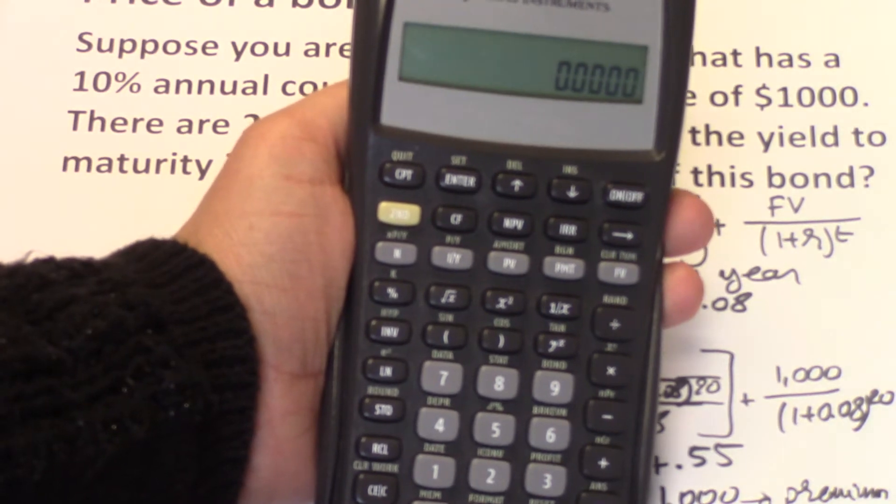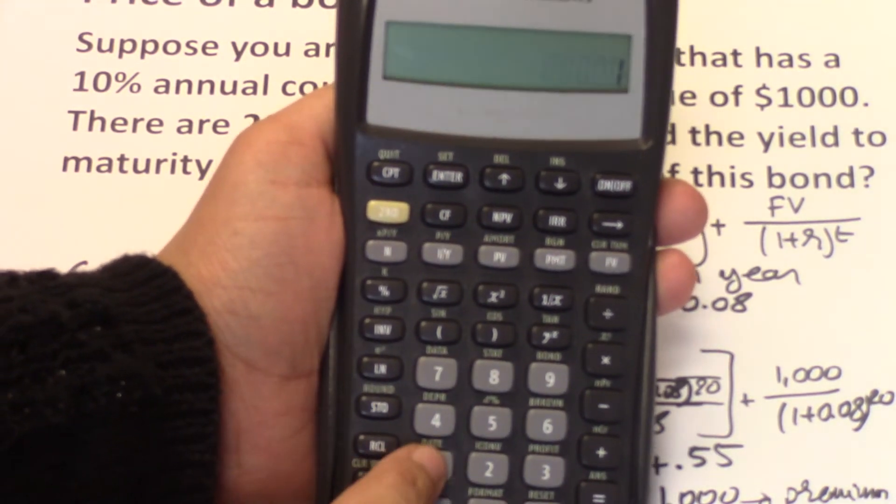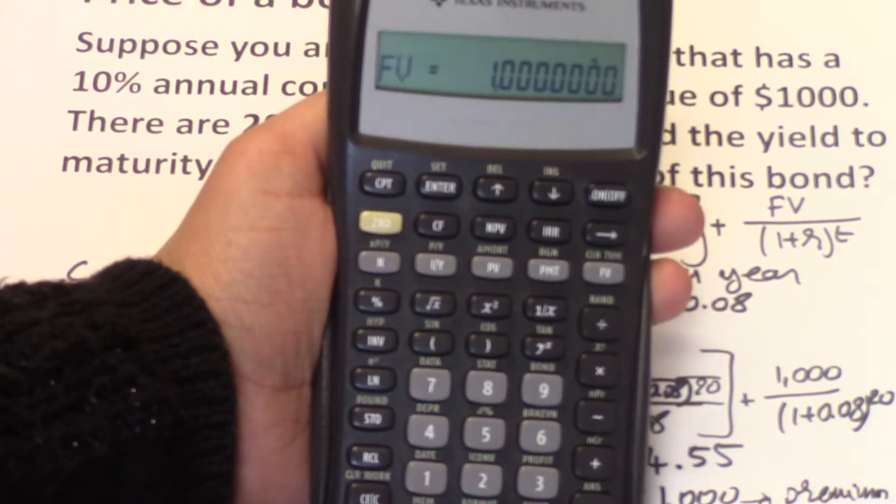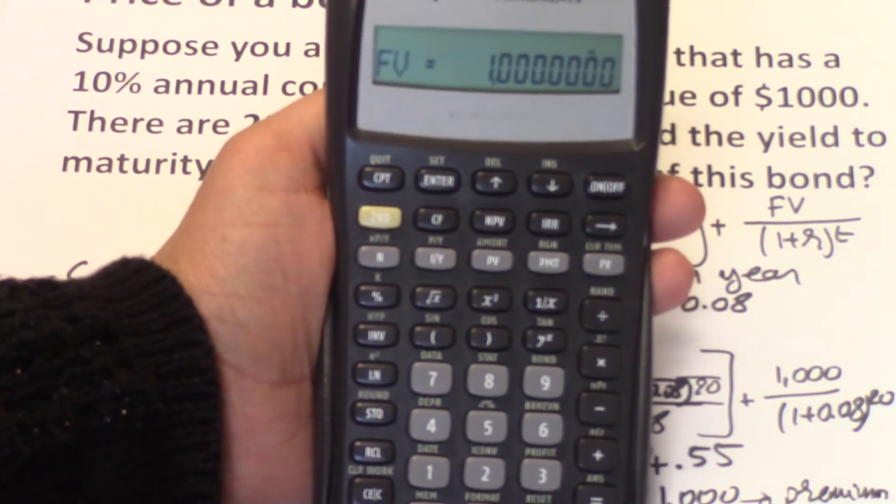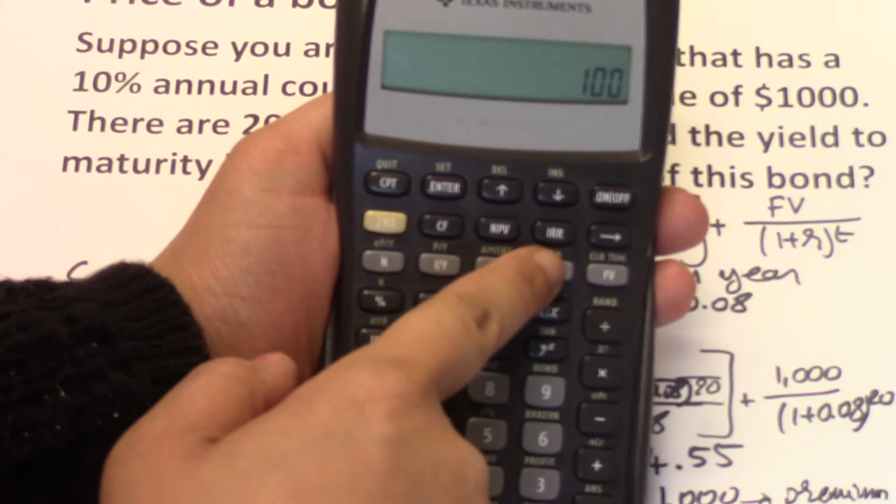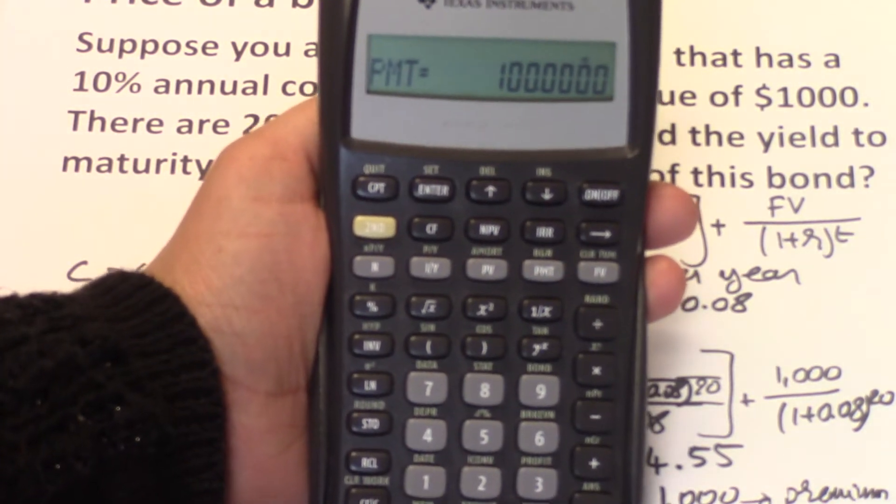This bond is going to pay $1,000 at the end of 20 years. So $1,000 is your future value. The bond will also pay a coupon payment of $100. So the $100 will be a cash inflow to you, and so that will be your PMT.